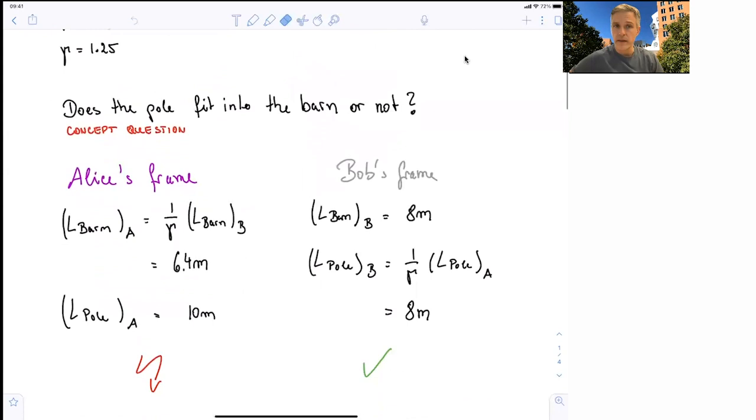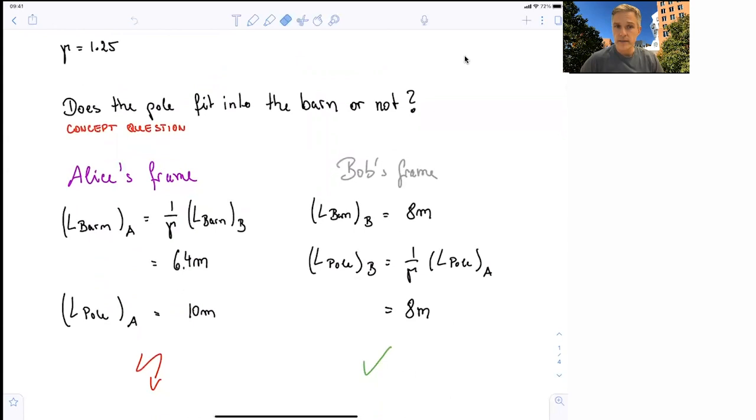Here is the analysis for Alice's frame and the analysis for Bob's frame. For Alice, the barn in her reference frame is Lorentz-contracted. It's 6.4 meters long, while her pole is 10 meters long. So we should clearly answer this question by saying it doesn't fit.